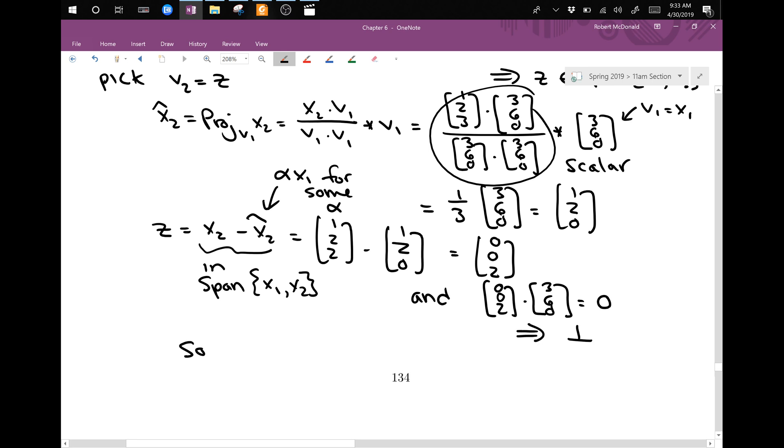And so v1, v2 equals [3, 6, 0], [0, 0, 2] is a basis. It's an orthogonal basis, in fact, for W, which is the, again, the span of x1, x2.